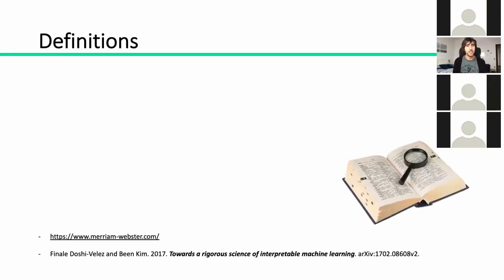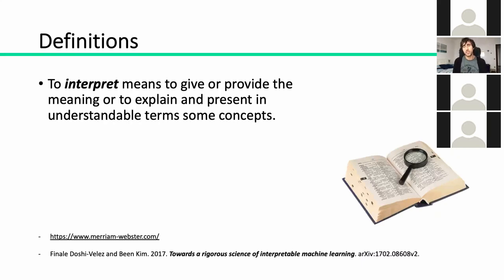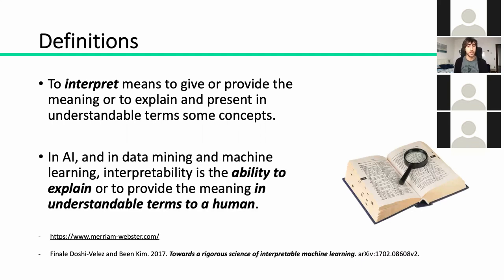I want to start from the definitions, because in explainable AI there are two verbs or nouns which are widely used. The first one is to interpret, which from the dictionary means to give or provide the meaning, or to explain and present in understandable terms some concepts. In AI, this verb, interpret, is referred with a strong reference to human — it's the ability to explain and provide the meaning in understandable terms to a human, indicating that the knowledge is going from a machine, from an artificial intelligence system, to a human.